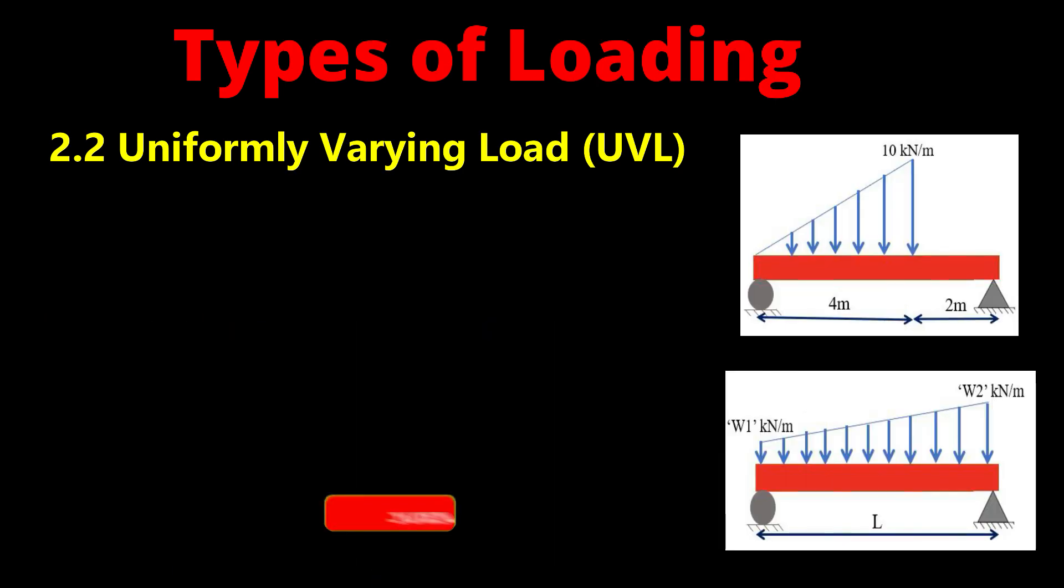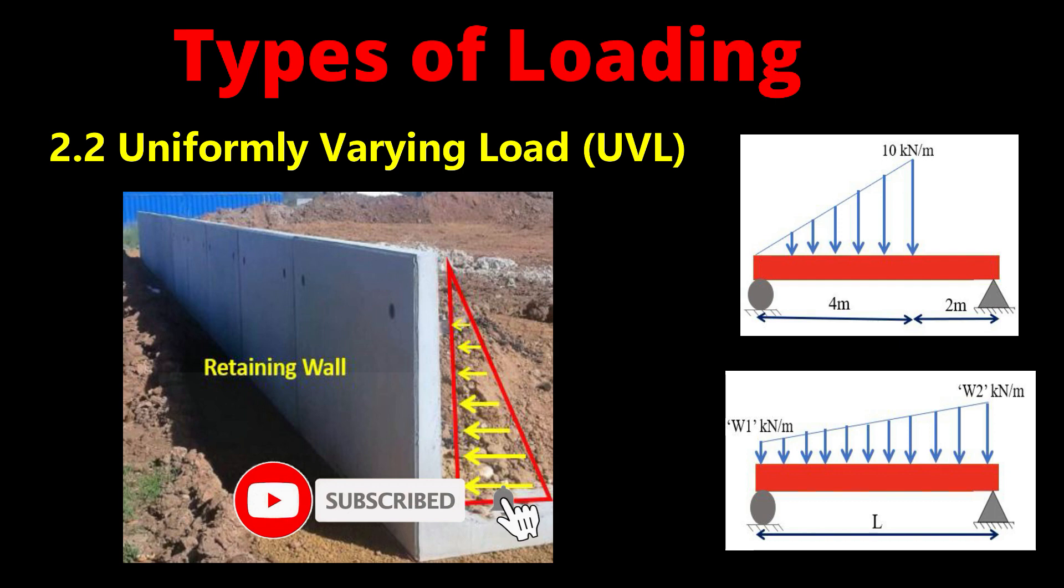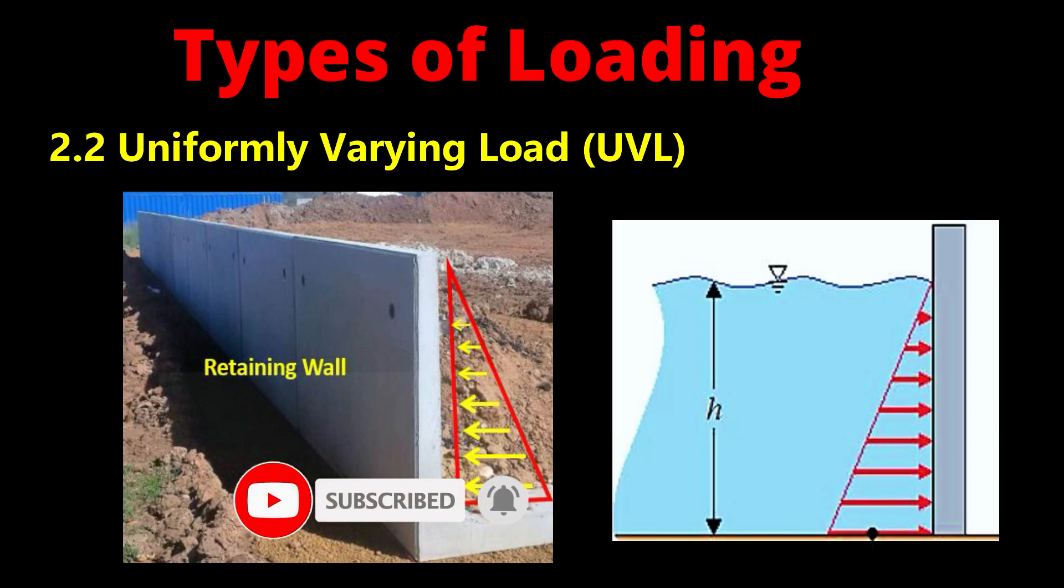Examples include earth pressure acting on a retaining wall and water acting on the sides of a water tank. These are a few examples of UVL, uniformly varying load.